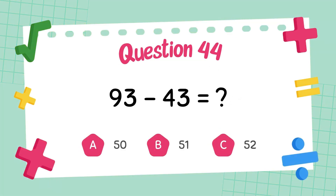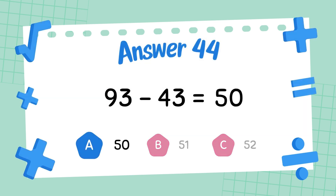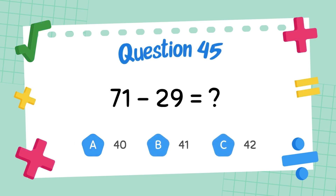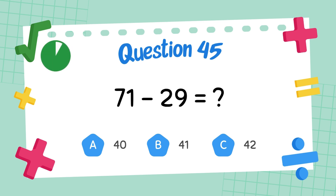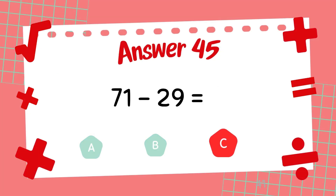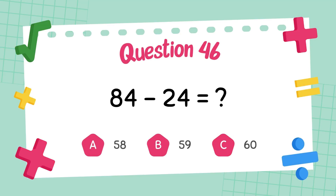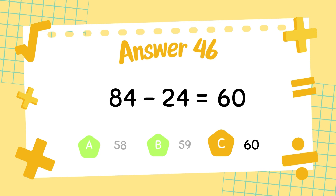What is ninety-three minus forty-three? The answer is fifty. What is forty-three minus forty-three? The answer is 42. What is 84 minus 24? The answer is 60.